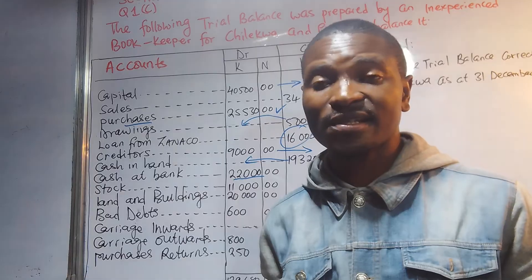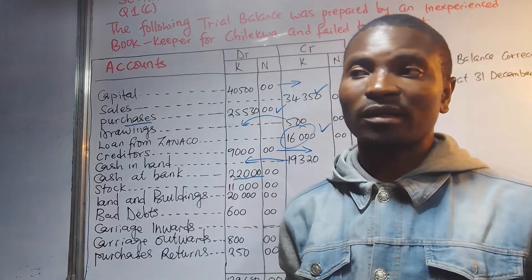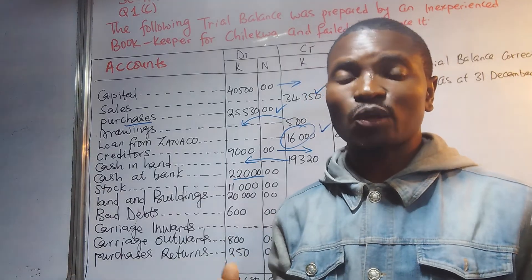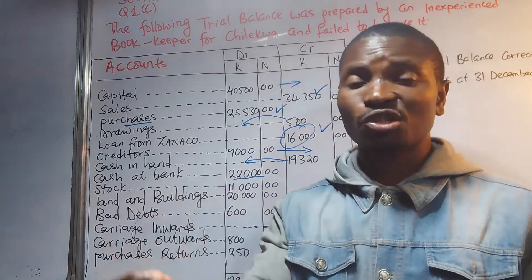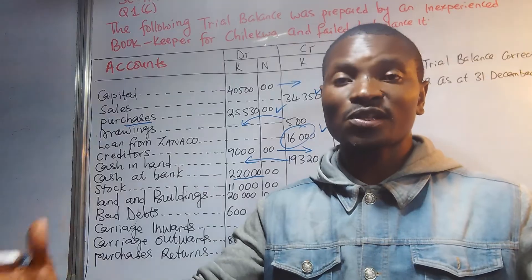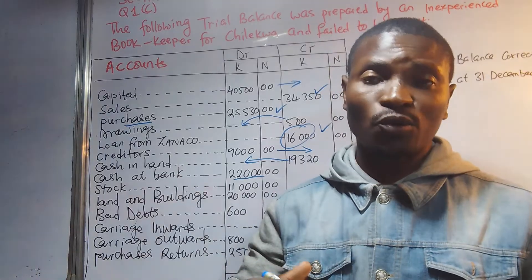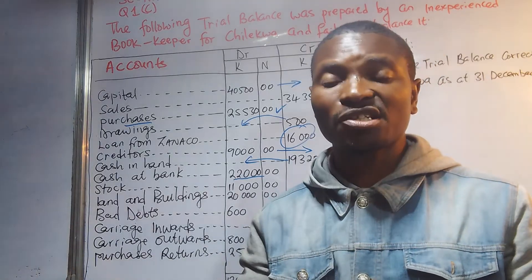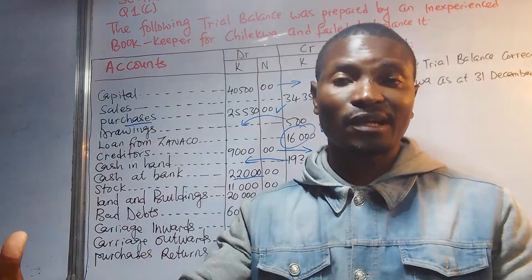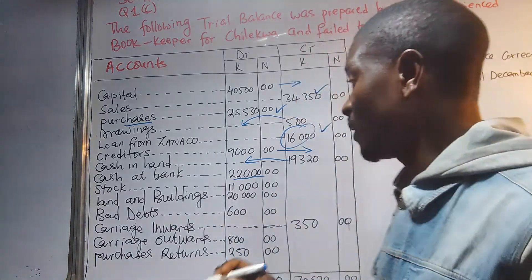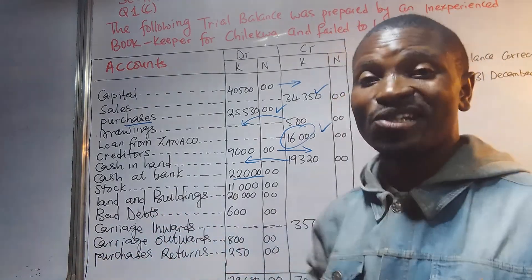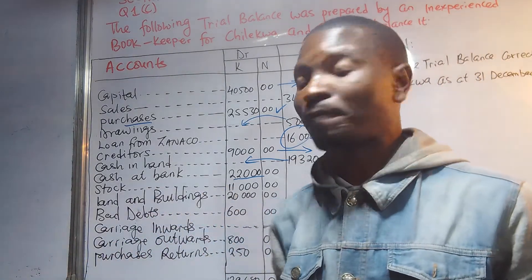Stock refers to goods in your shop or business that you are selling. These could be current assets. When you sell them, you exchange them for cash from customers. Stock should be on the debit side because it is what we use to make money.